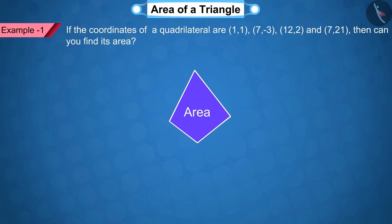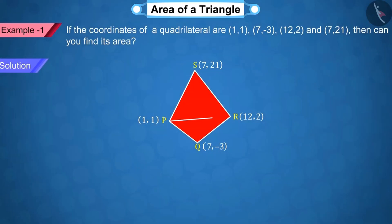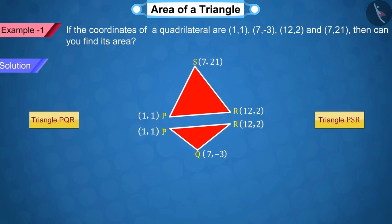Let's discuss. First, let's represent the coordinates of the quadrilateral with the points P, Q, R and S. Can you guess how to find the area of this quadrilateral? Correct! If we join the point P to the point R, then the quadrilateral gets divided into two triangles, PQR and PSR.